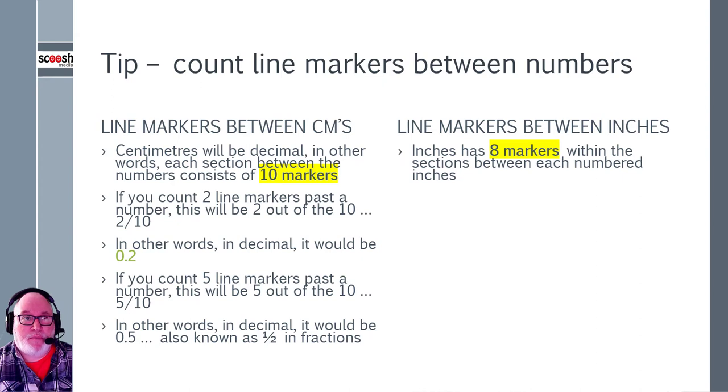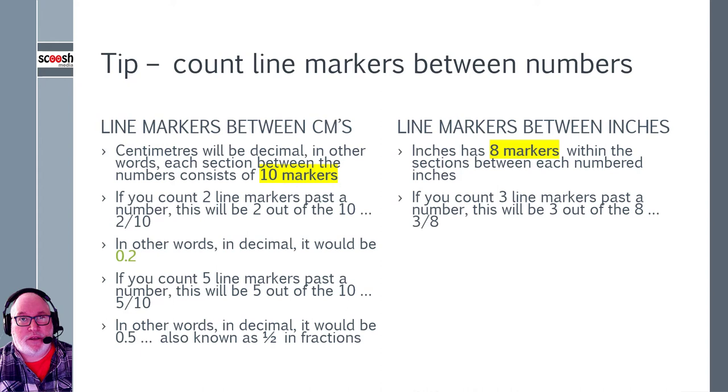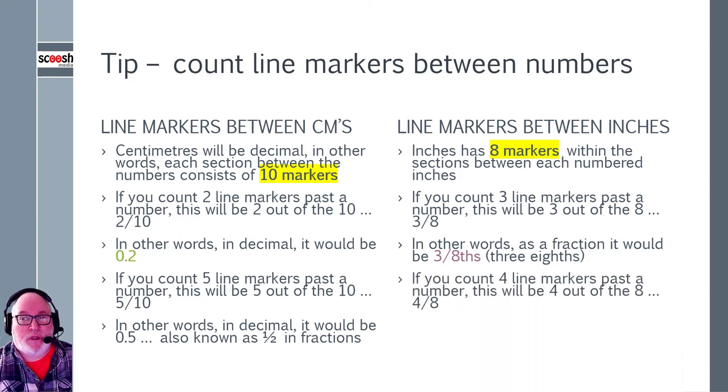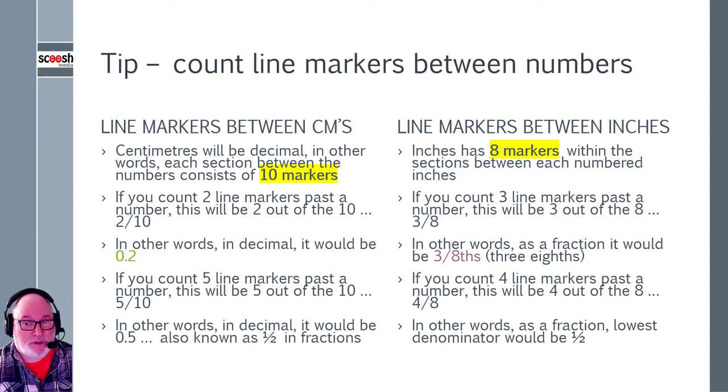Now look at the inches. So remember, there was 8 markers between each number. If you count 3 line markers past the whole number, then it'd be 3 out of the 8. And it's written as 3 over 8, which is a fraction. It's 3 eighths. So all it's saying is that it's 3 parts out of a total of 8. If you count 4 line markers past the number, any number, it doesn't have to be the one which we're working on or the one which you actually viewed a minute ago. It could be any one, any time.